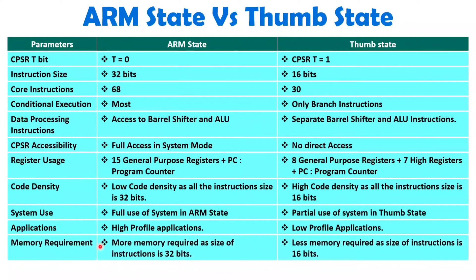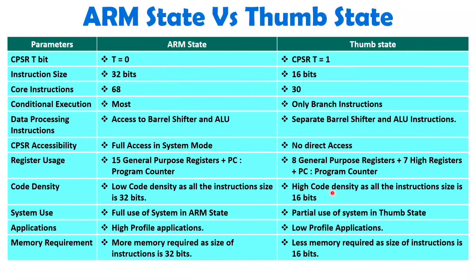Memory requirement is more with ARM state because instruction size is 32 bits, resulting in low code density and more memory needed. In Thumb state, less memory is required since instructions are 16 bits, code density is high, and therefore less memory is required for the program.